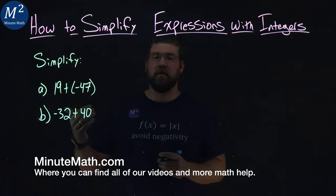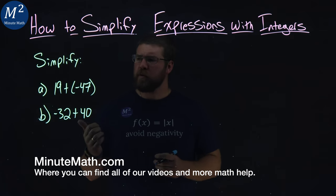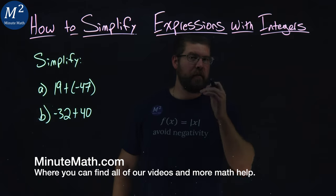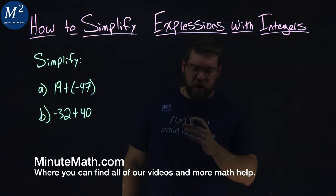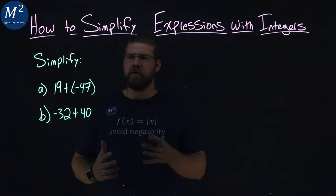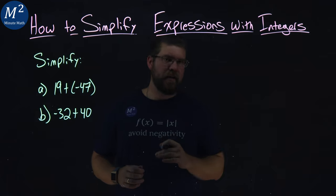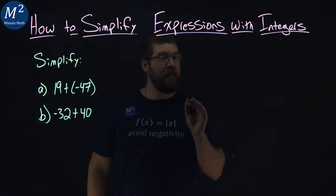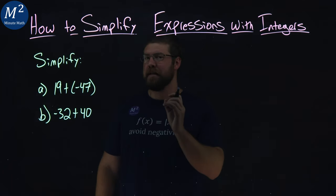We're given two expressions here we want to simplify. Our first one is 19 plus a negative 47. Now 47 is a larger number than 19, and 47 has a negative designation, so we know our final answer has to be negative.